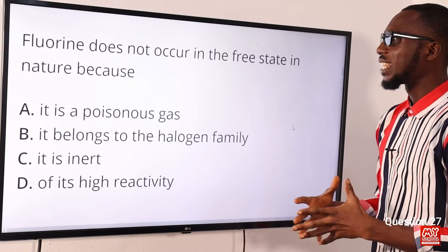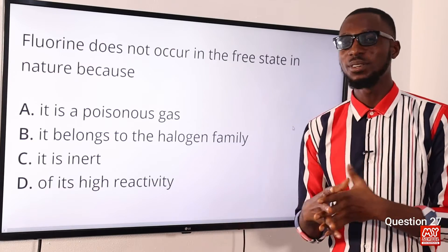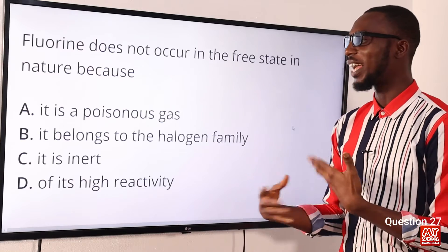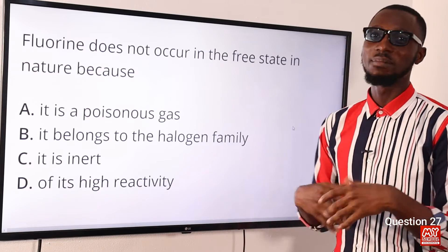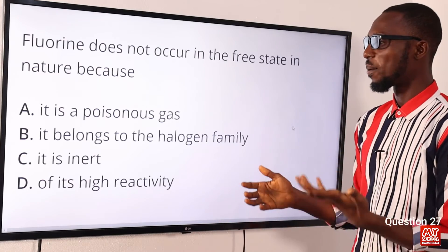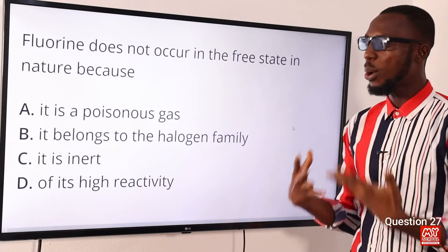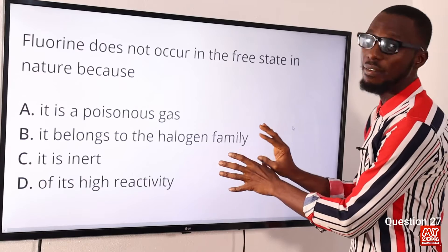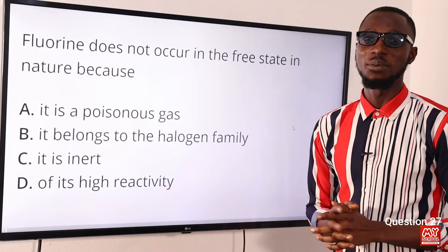Question 27: Fluorine does not occur in the free state in nature because why? Fluorine belongs to the halogen family. Halogens are known as salt formers and are the most reactive non-metals, so they can't be found in their free states — they are always reacting and forming salts. While belonging to the halogen family accounts for this, the most important reason is its high reactivity. Option D is the most viable answer.